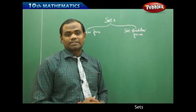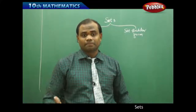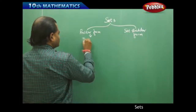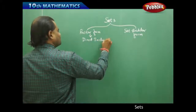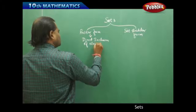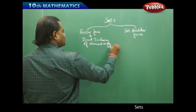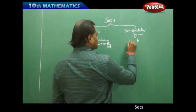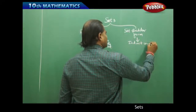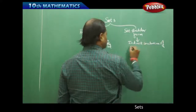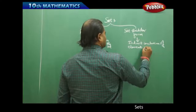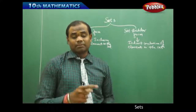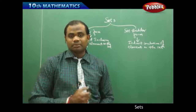Let's look at further examples to understand the roster and set builder form better. Roster form is the direct inclusion of elements in the set, while set builder form is the indirect inclusion of elements in the set.